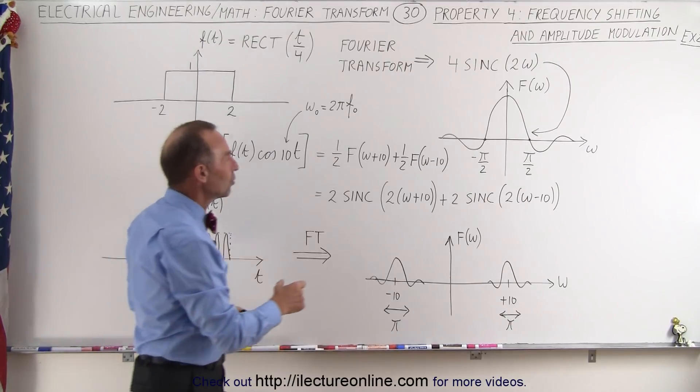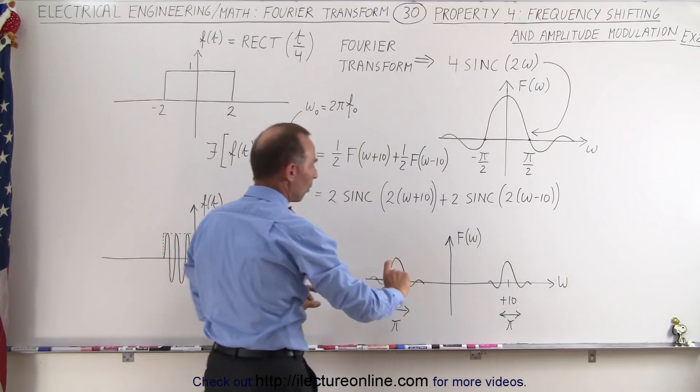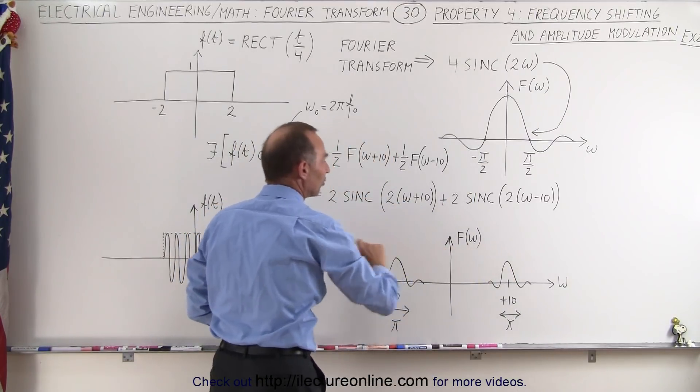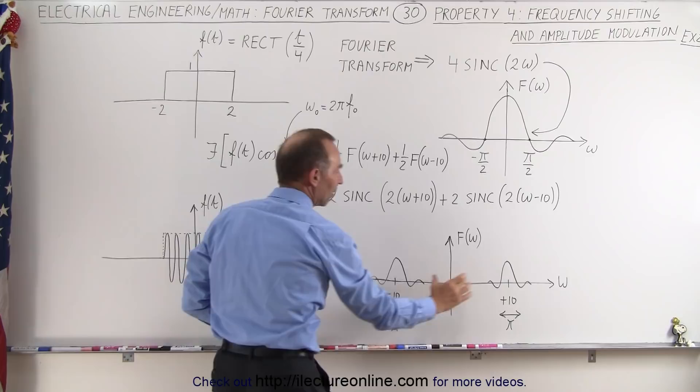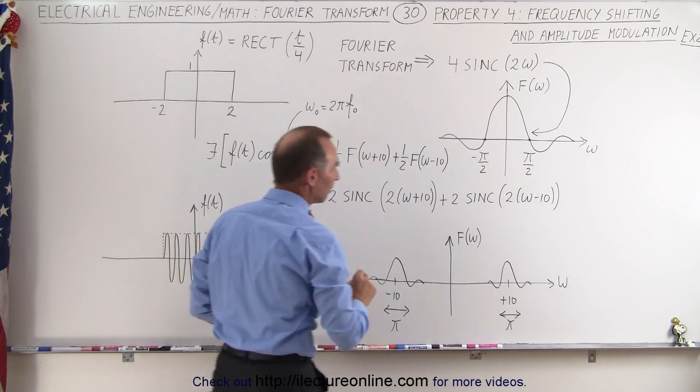When you do that, notice that you get two similar sinc functions. There will be half the amplitude as before, the width of each will still be a difference of a pi, just like we had it over here.